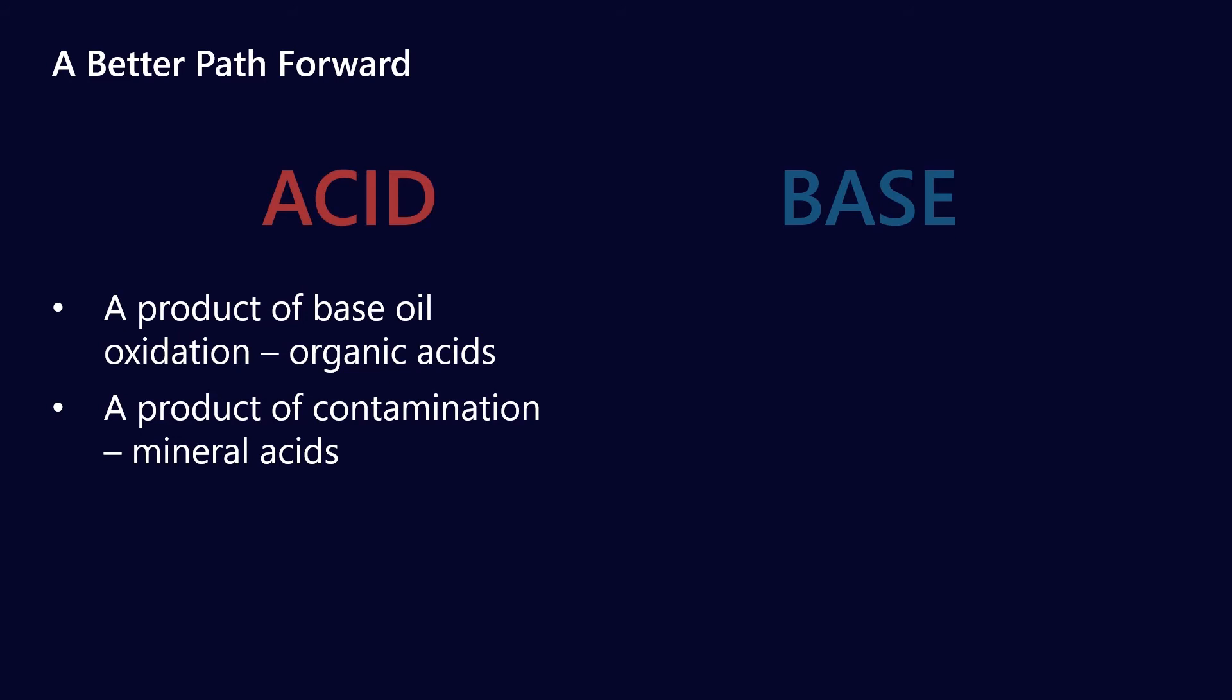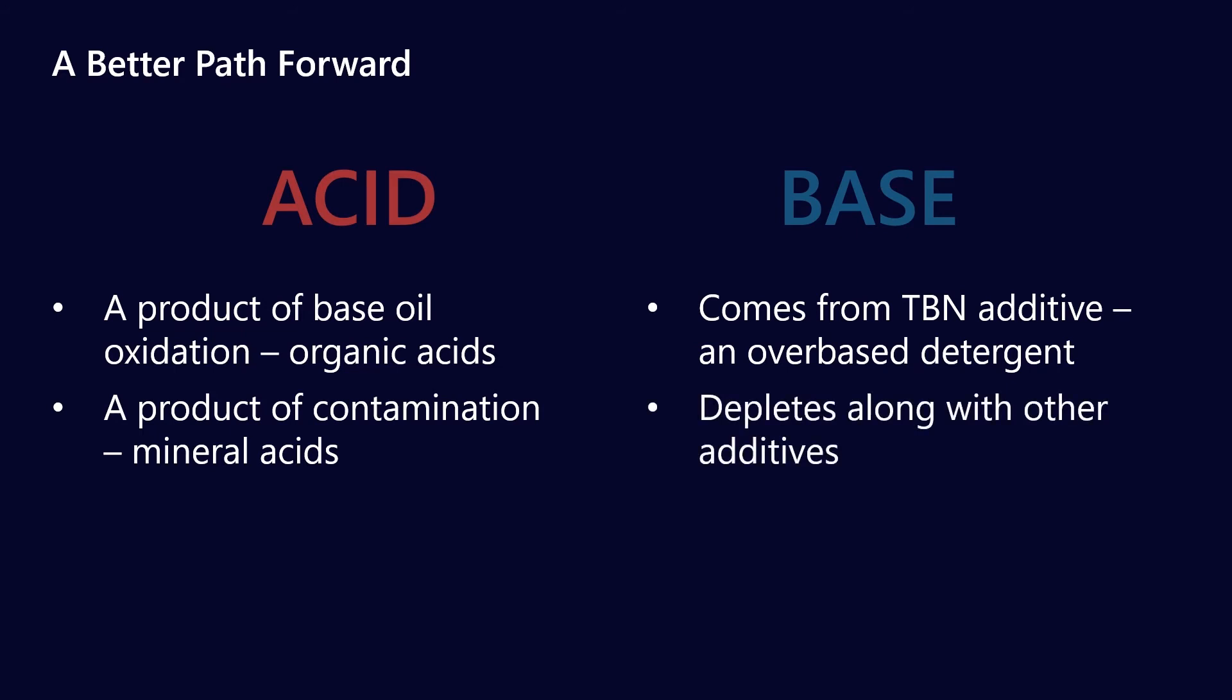So you should think of acids as being unwanted products of the lubricant being used in service. Base comes from a TBN additive. So TBN additives are over-based detergents. Again, I'll have to do a separate video on exactly how that's achieved, but they're on purpose, right? The lubricant formulators put TBN additives in there on purpose, and TBN depletes in the same way that other additives deplete. So ZDDP, for example, will deplete over time. And so now that we put these against each other, TAN and TBN are not really the opposite of each other. One is talking about a breakdown in the oil, and the other one is talking about an additive.